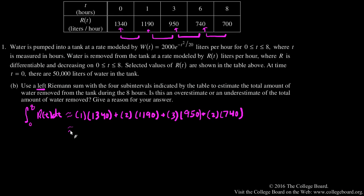So 8,050. This was liters per hour times hours. This is going to end up being liters. So this is an estimate of the total amount of water removed from the tank, 8,050 liters.